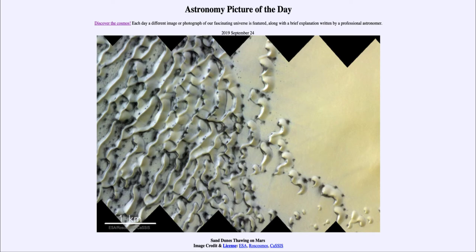Seasonal changes do happen on Mars much as they happen here on our own Earth. That was our picture of the day for September the 24th of 2019, titled 'Sand Dunes Thawing on Mars.'